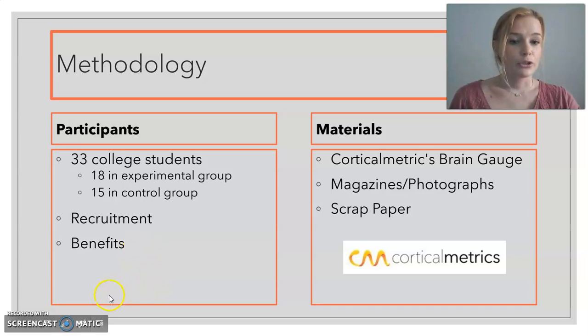So my materials include the corticalmetric brain gauge technology, which is how I assessed cognition with my participants. And I'll be talking about that a little bit later. I used magazines and photographs, scrap paper, and those were all used in both the experimental group and the control group.